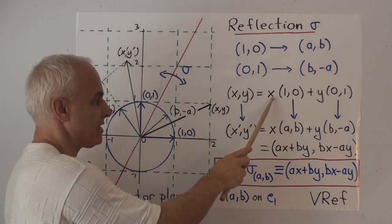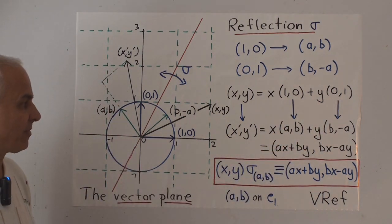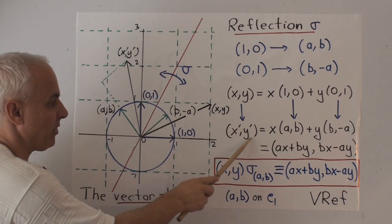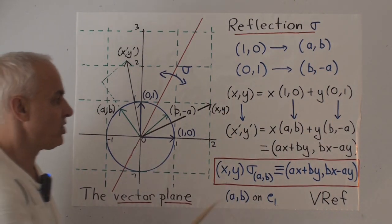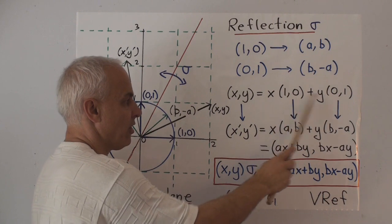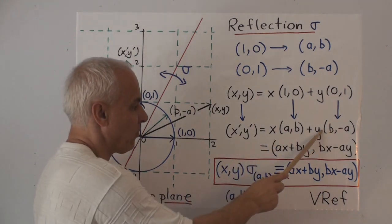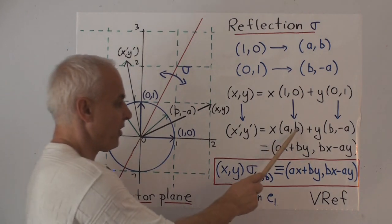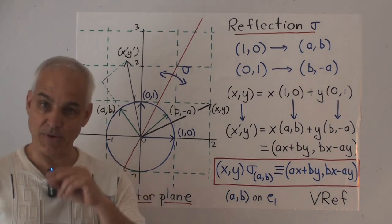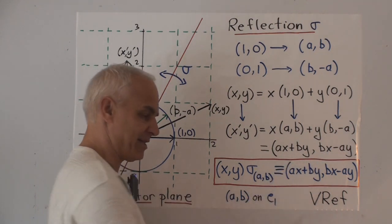A general vector x,y can be written as a combination: x times 1,0 plus y times 0,1. It's called a linear combination of vectors. And if we know where 1,0 goes, and if we know where 0,1 goes, then x,y is going to be sent to a new vector x prime, y prime, which is x times AB plus y times B minus A. These are the images of these two vectors under this reflection. We work this out. This is Ax plus By or By. There's the x coordinate. And the y coordinate is Bx minus Ay right there. It's very much like the formula for a rotation that we saw in the last video, except that there's a plus sign here and a minus sign here. And in the previous one, there was a minus sign here and a plus sign here.